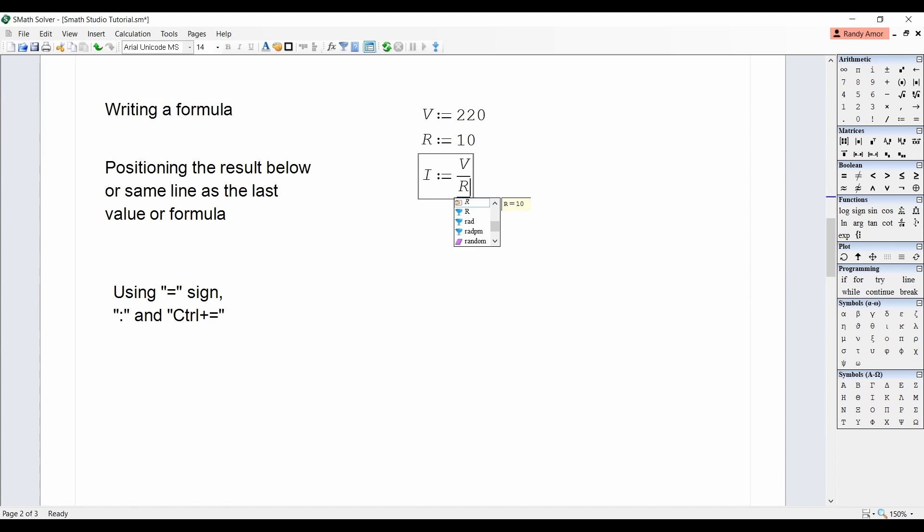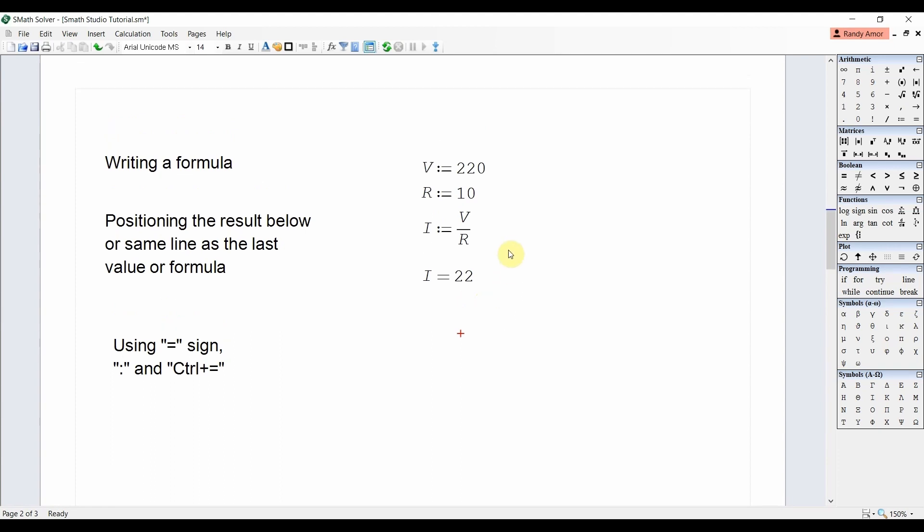It doesn't matter if the formula is written first before the variables are defined or the other way around. What is important is that the request for the answer is below all the variables and below or to the right of the formula. In this example, if we press equals to the right of the formula, we get the answer for the current because the request for the answer is below all the variables and to the right of the formula. Likewise, we can also get the value of current by typing I equals below the formula. Now, if we move the formula above the variables, the answer will still be displayed because the line requesting for the answer is below the variables and the formula. If we then remove the line to calculate the current and then type equals to the right of the formula above, it will produce an error because the request for the answer is above the variables.